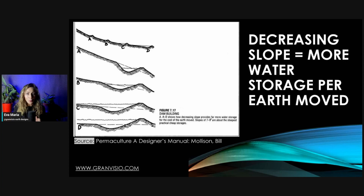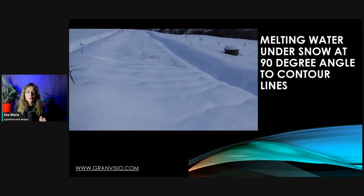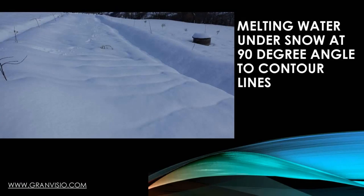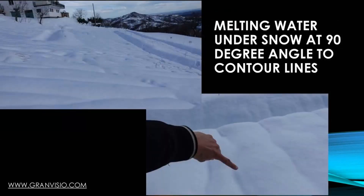I want to show you a photo taken a year ago. We got a big snow event — half a meter, about two feet, in 24 hours. After a few days, when the snow started melting, you could see these lines of water movement. This perfectly shows the shape of our landscape without even looking at a contour map. Water moves at a 90-degree angle to contour lines, so the imaginary lines perpendicular to these water lines are our contours.